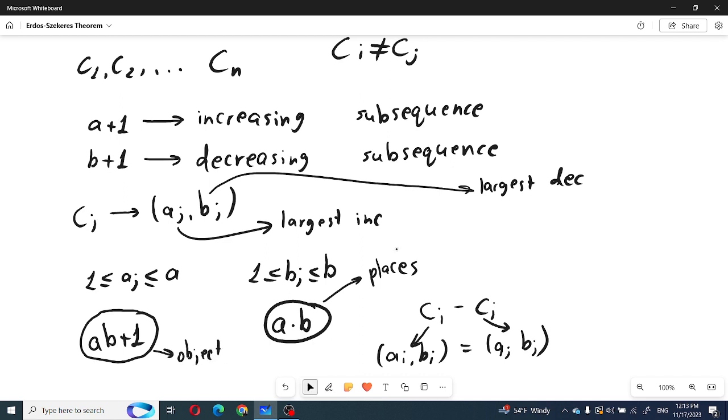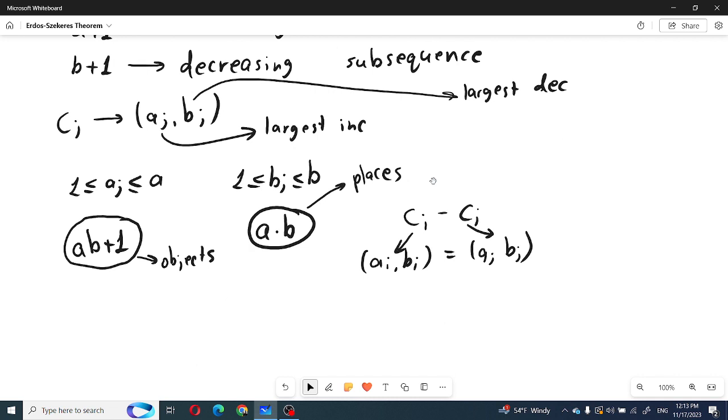And because of this pigeonhole principle, we can prove that there will always exist C_i and C_j where the appropriate pairs will be the same.